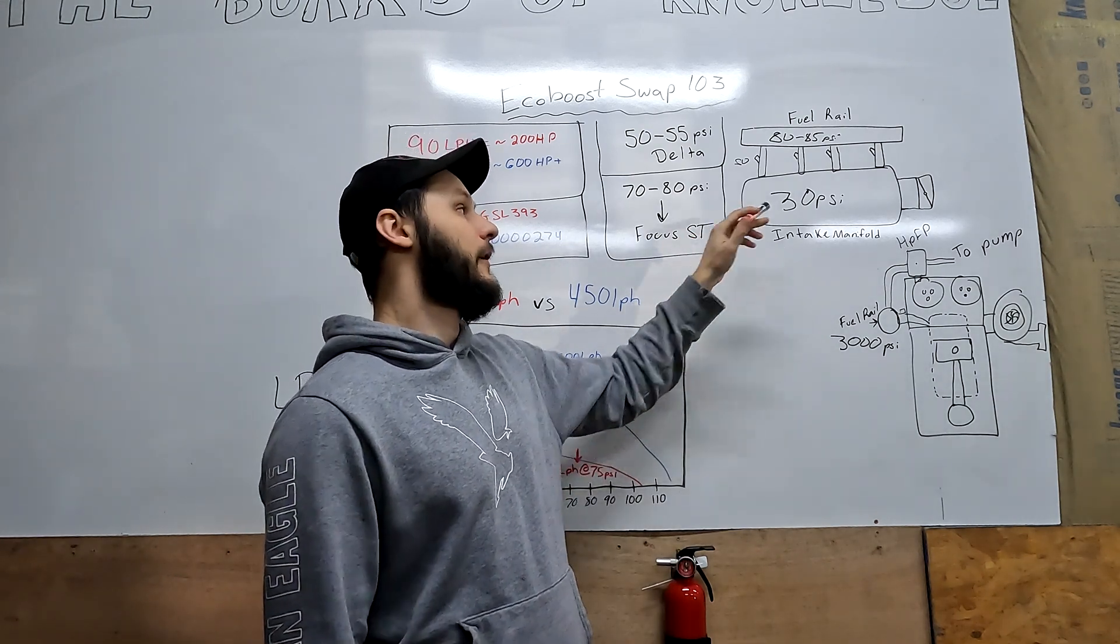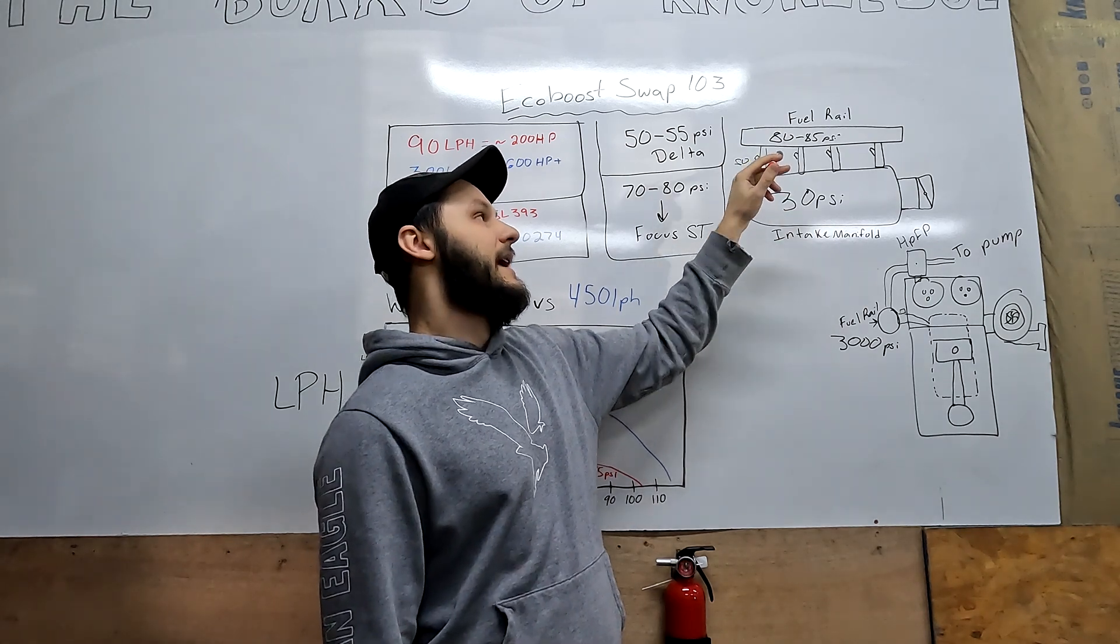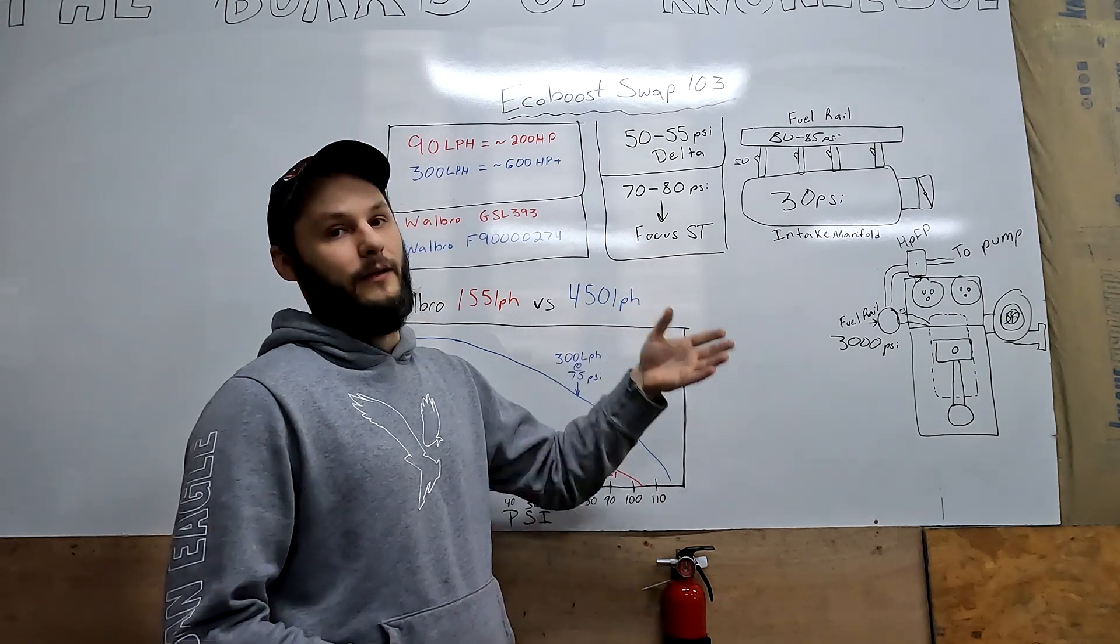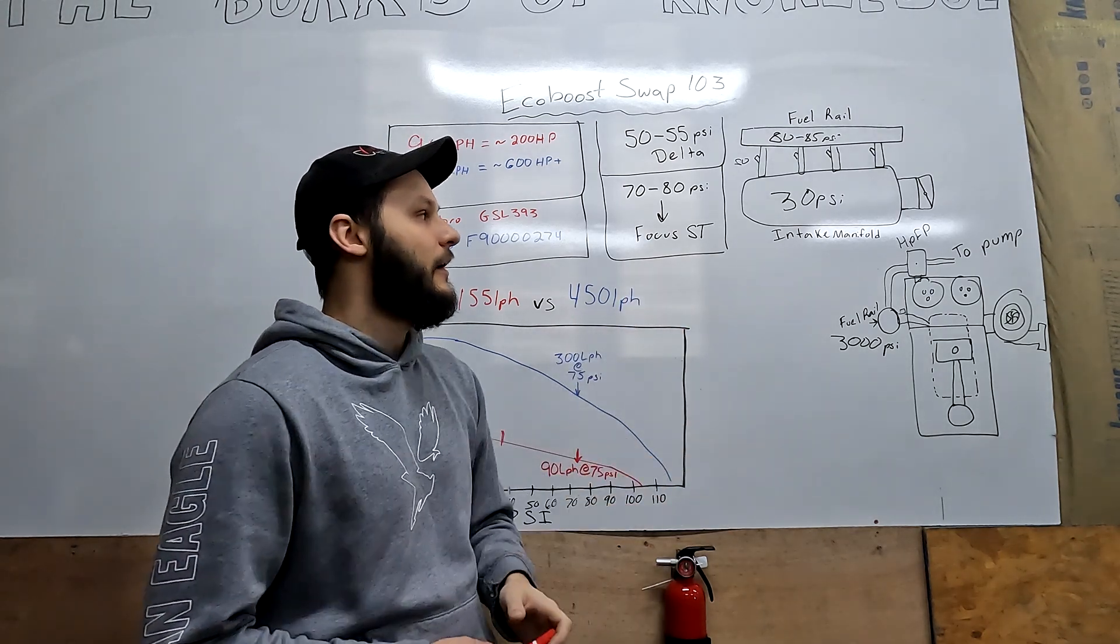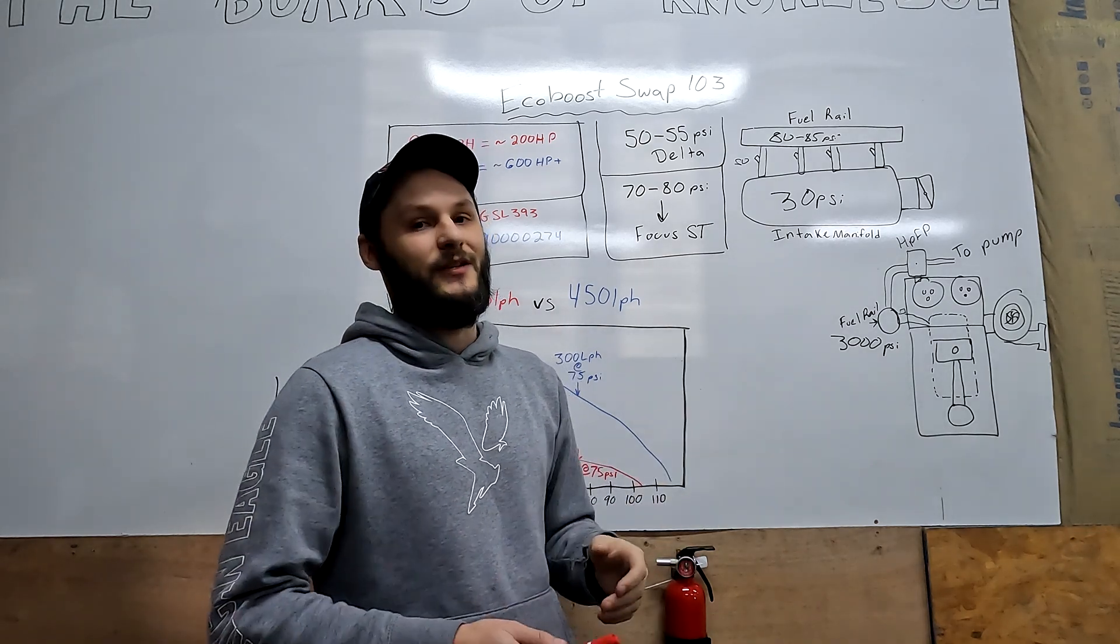If we're under boost, under load, we have 30 psi inside the intake manifold, we want to have 80 to 85 psi in the fuel rail. We want to have 50 to 55 psi more in the rail than what's in the intake manifold.